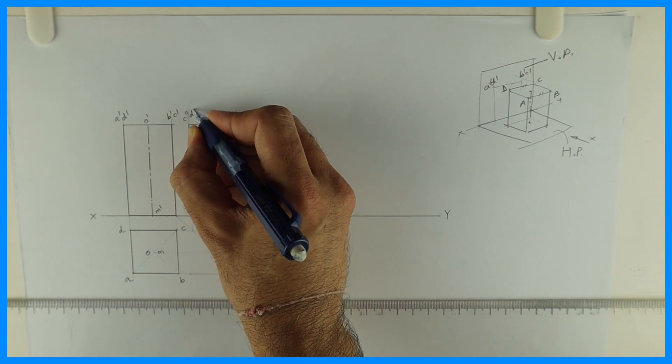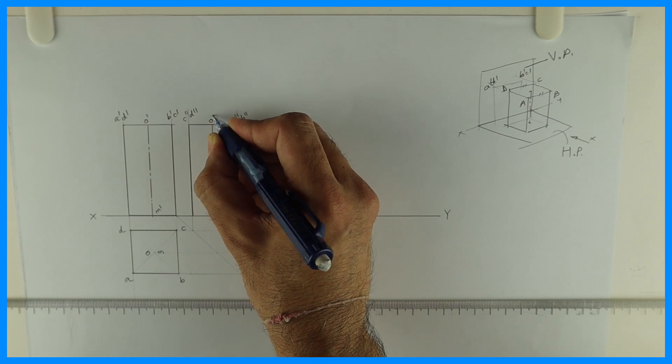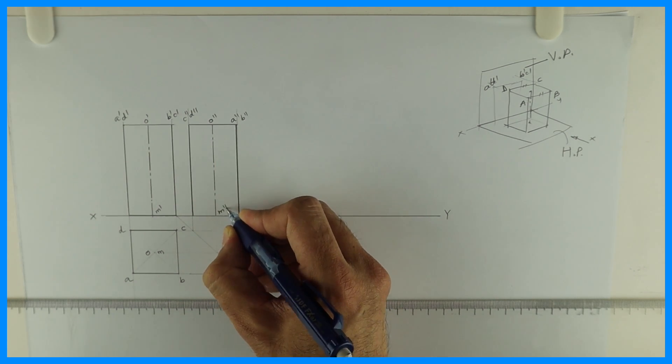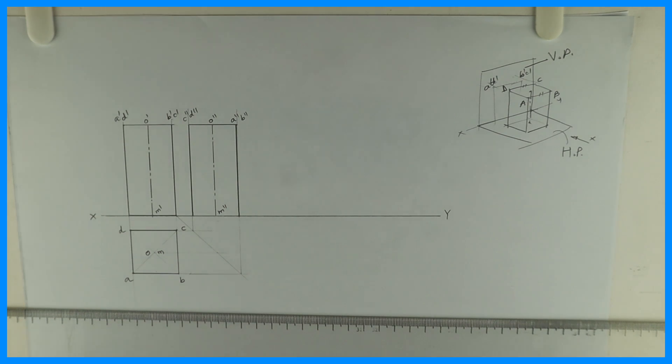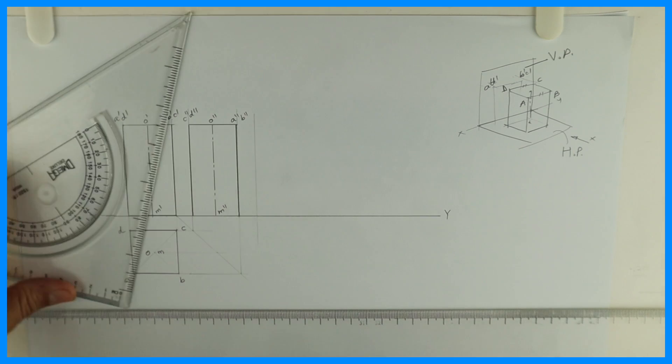This is C double dash, D double dash. So these two lines are parallel to vertical plane. See this. C double dash, D double dash. And A double dash, B double dash. That is A, B and C D are parallel to vertical plane.